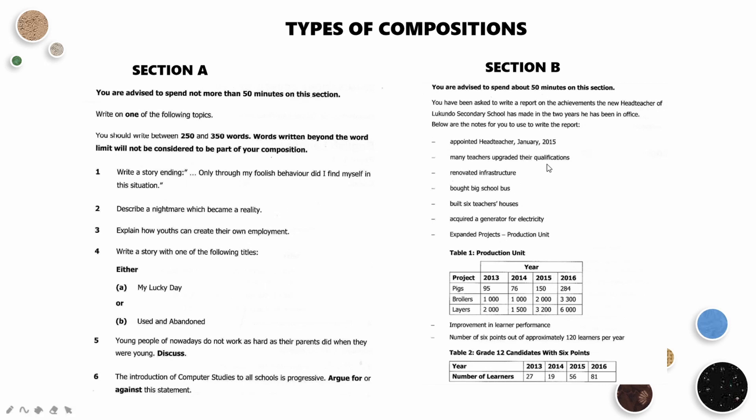And then for section B, you do not know which one is going to come. Therefore, it's important for you to know the format of each type of composition, be it a report, a speech, a letter, and so on. So you can also use elimination method. If in the past two years, as an example, a speech and a report came, so this year you should be looking at topics like letter writing and so on.